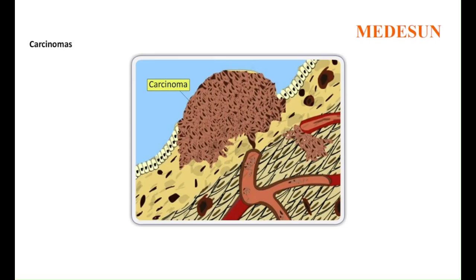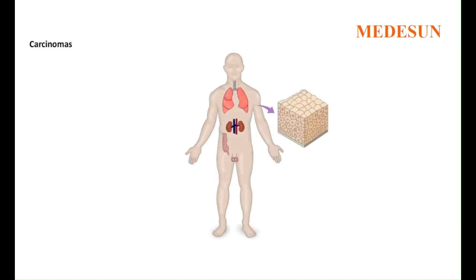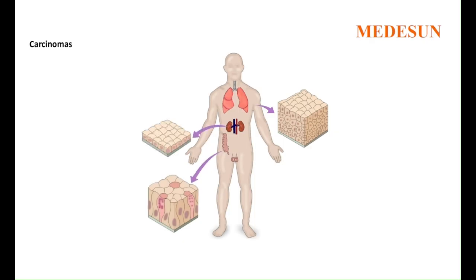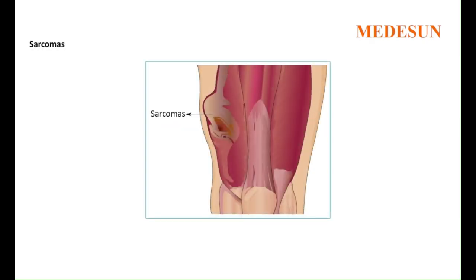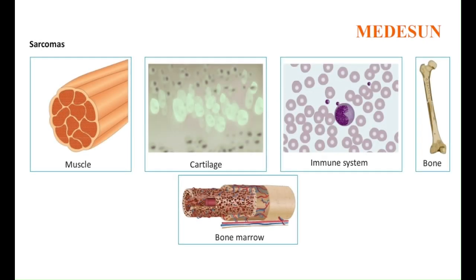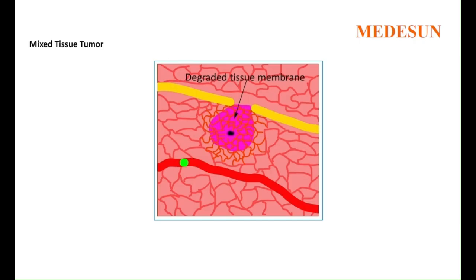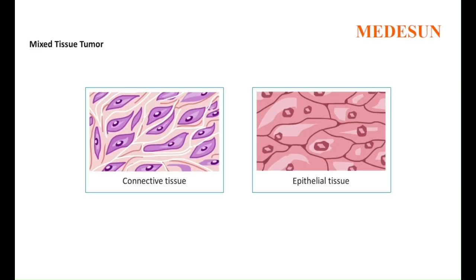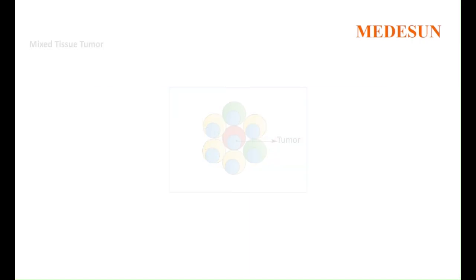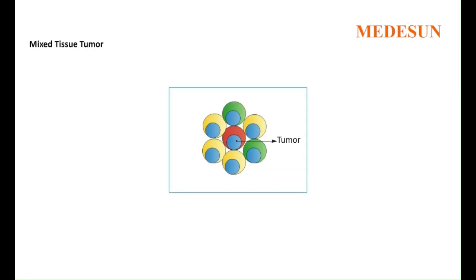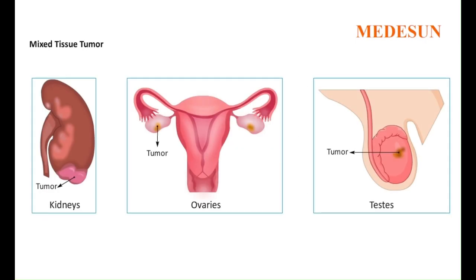Carcinomas are solid tumors resulting from epithelial tissues that make up external and internal body surfaces, including the skin, glands, and digestive, kidney and reproductive organs. Sarcomas are less common than carcinomas and result from supportive and connective tissues such as muscle, cartilage, bone, bone marrow, and from cells of the immune system. Mixed tissue tumors result from tissues capable of differentiating into both epithelial and connective tissue; these uncommon tumors are composed of several different kinds of cells and can be found in the kidneys, ovaries and testes.